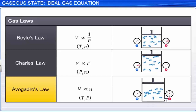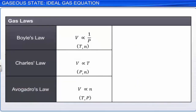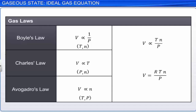On combining these three laws, we get the ideal gas equation. When we introduce a constant of proportionality R, the equation can be written as V equals R times N times T divided by P. Here, R is known as the universal gas constant. To find the value of R, we need to rearrange the equation and substitute appropriate values of P, V, N, and T.